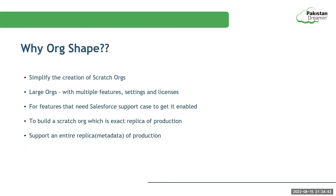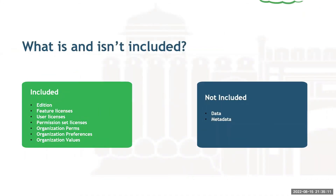Sometimes not all features are available in the features section. There are some features Salesforce will enable when you reach out to them via a Salesforce support case — those are situations where you can use org shape. Also, when you want exact features, settings, limits, and licenses of the production org, you can use org shape. The main purpose is to simplify the creation of scratch orgs that will support an entire replica of production. Org shape includes the source org's edition, which decides which features you get out of the box, plus feature licenses for add-on functionalities, and settings like user licenses, permission set licenses, organization permissions, preferences, and values. Data and metadata are not included.